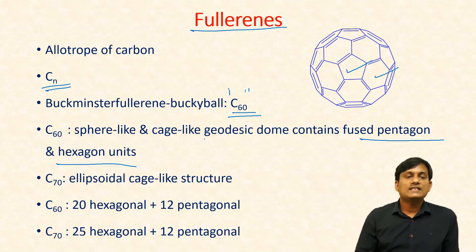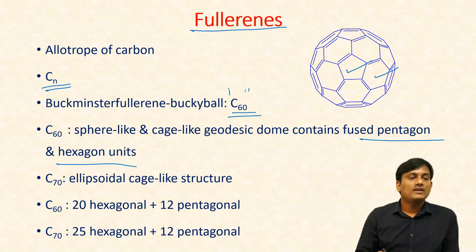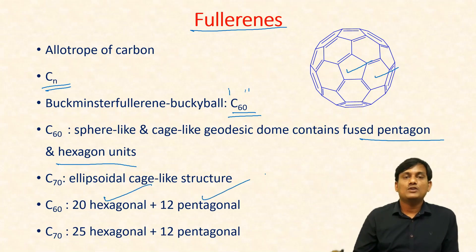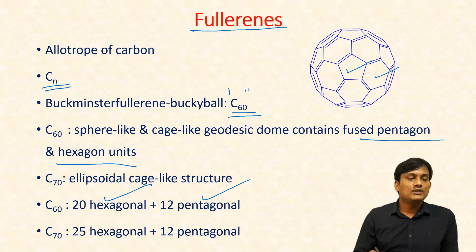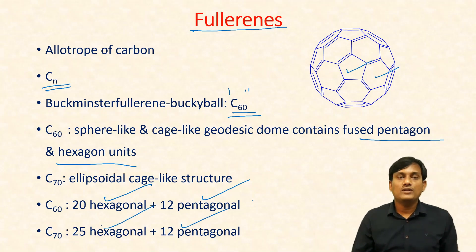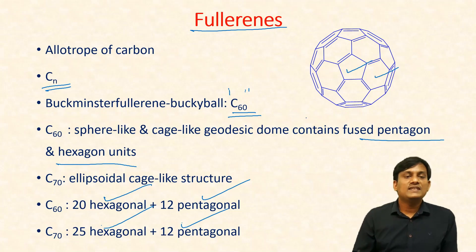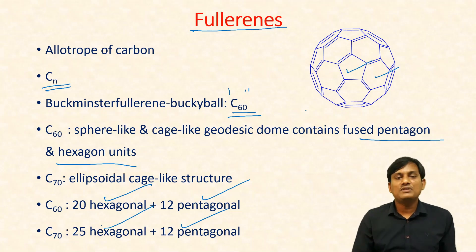There is a difference between C60 and C70 structures. In the case of C60, you can find 20 hexagon units and 12 pentagon units. In C70, there are 25 hexagon units and 12 pentagon units.